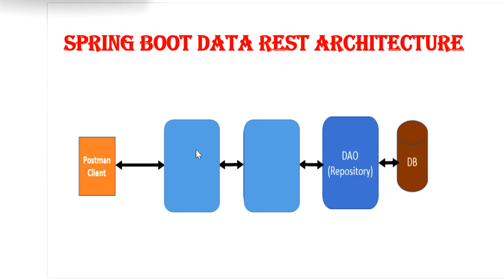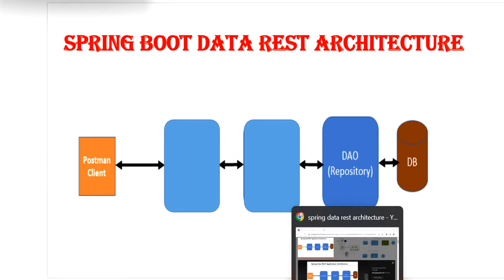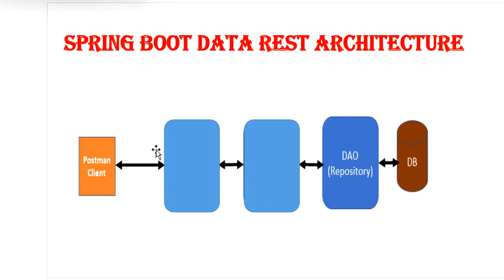For example, if we have multiple entity classes — employee, department, project, company, etc. — we don't need to create a controller and service for each one. We just need to declare the entity and its DAO layer repository class. That's enough with the help of Spring Data REST. We can minimize boilerplate and controller layer code. Let's create a project and see how to use Spring Data REST in our application.